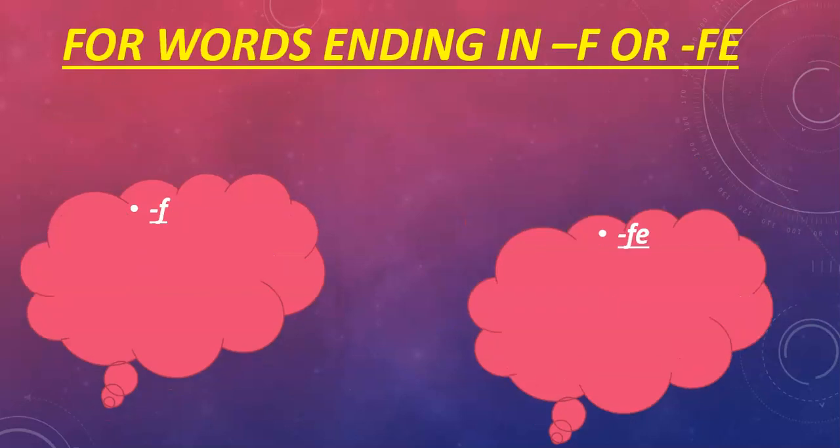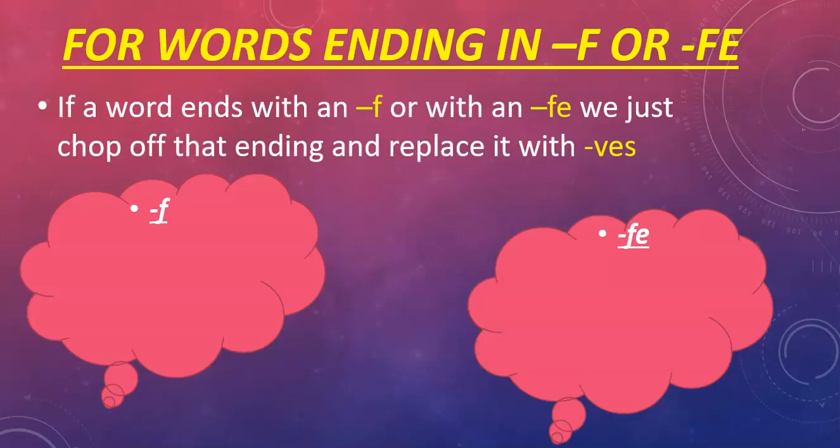For words ending in F or FE, we have to do something a little bit differently. And basically, we chop off that F or the FE and we replace it with VES. Words that end in F like WOLF and SHELF. We knock off that F at the end of WOLF and we replace it with VES, WOLVES. How will we spell the plural of SHELF? That's right, SHELVES. We knock off the F and add VES.